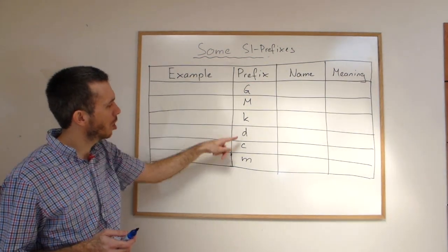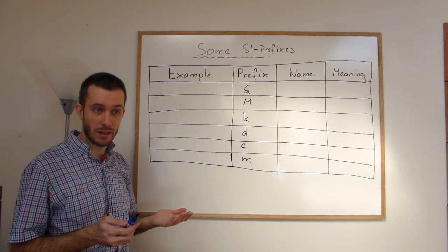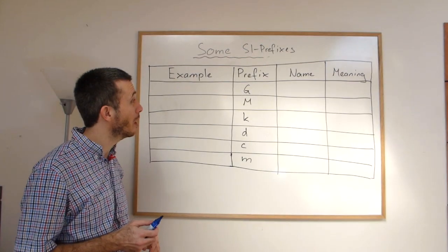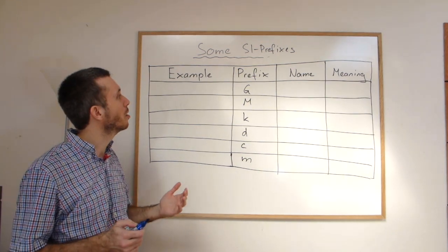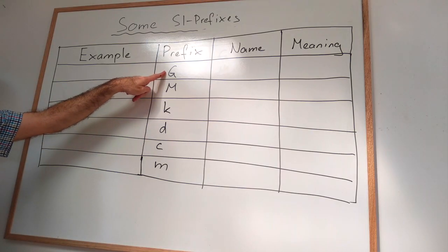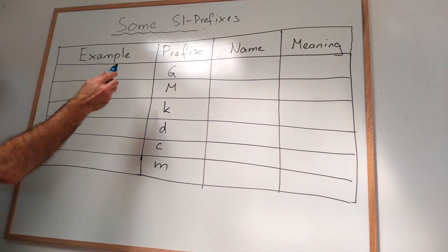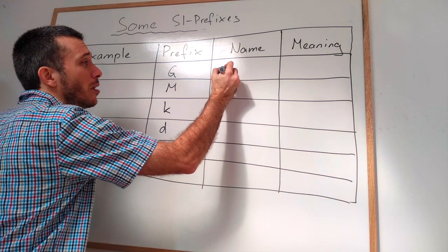So I have here a couple of the common prefixes you will find every now and then. They're used with SI units, but they're also used with non-SI units. If we start at the top, here for example, we have the capital G, which then stands for Giga.